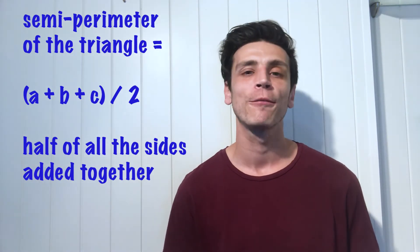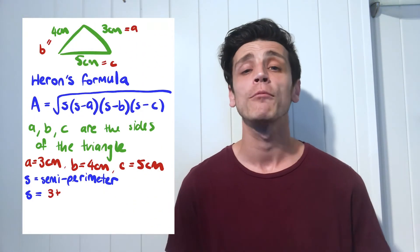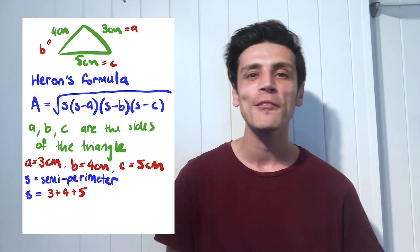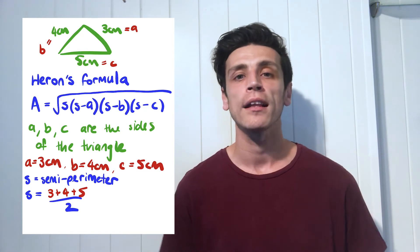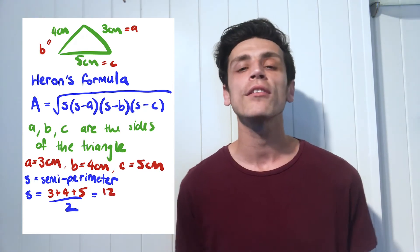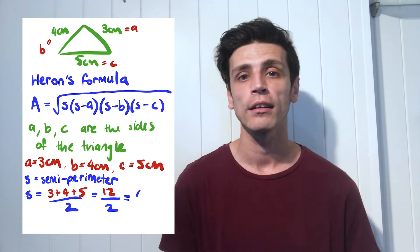So we've got three plus four is going to give me seven, seven plus five will give me twelve, and then twelve divided by two would give me six. So now I've got my value for S which is six and all I do now is put this into Heron's formula.